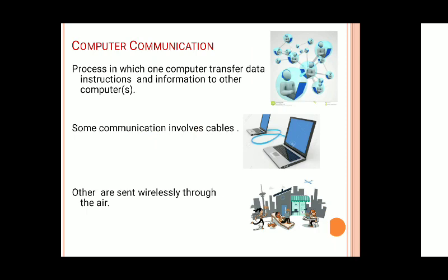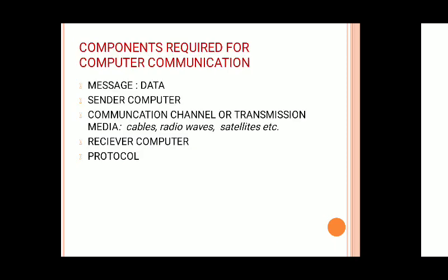Earlier, only large computers had communication capabilities, but today even smaller computers and devices can communicate directly with one another — like with hundreds of computers on a company network or with millions of computers around the globe, often via the internet. This communication involves cables and wires, as seen in the picture where laptops are connected with cables, while others communicate wirelessly through the air.